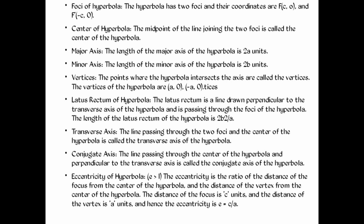The latus rectum of the hyperbola is a line drawn perpendicular to the transverse axis of the hyperbola and passing through the foci. The length of the latus rectum of the hyperbola is 2b² over a. The transverse axis is the line passing through the foci and the center of the hyperbola.